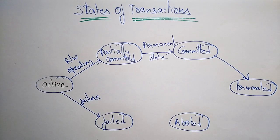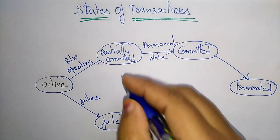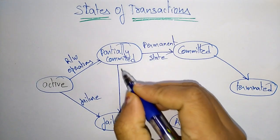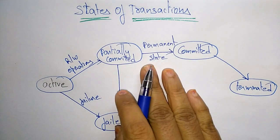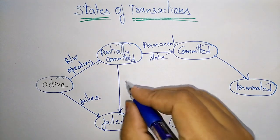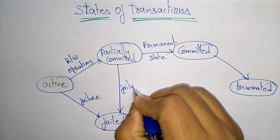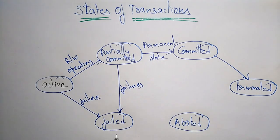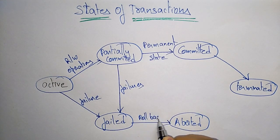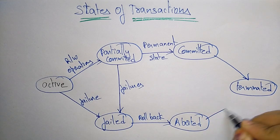If any failure occurs in your transaction while you are doing the operations, it enters the failed state. Similarly, after the read/write operations, if some failure occurs after the partially committed state, it also enters the failed state. From fail, it rolls back to the aborted state and then the program terminates.